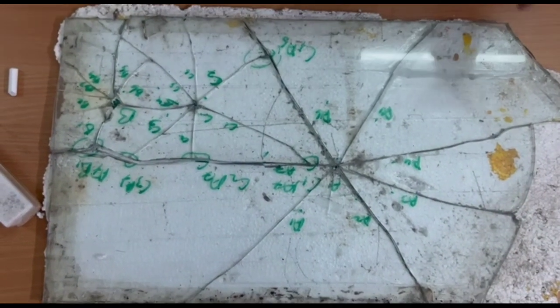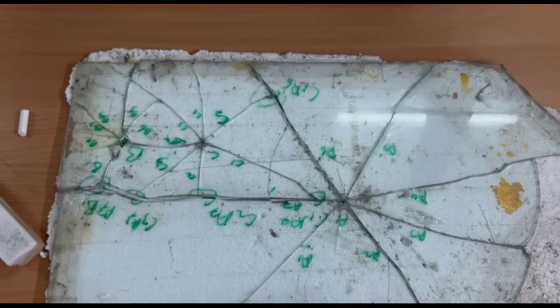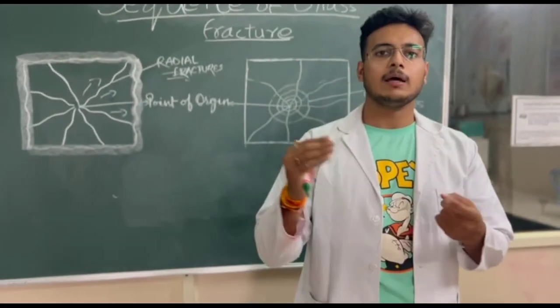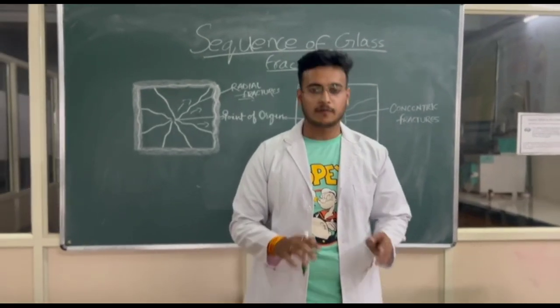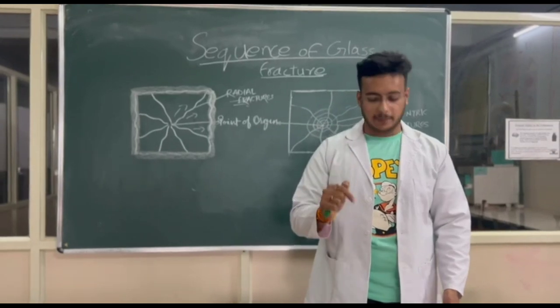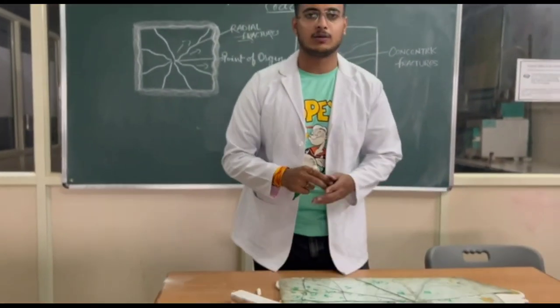This is how we will find out the sequence of glass fractures. The first one will get terminated by another because the first radial crack cannot pass through to another one. Here is how we can find out the points of termination and the sequence of impact of an object on glass. Thank you.